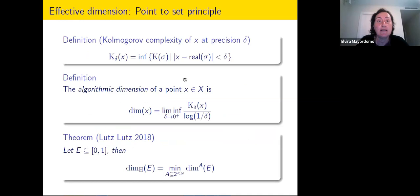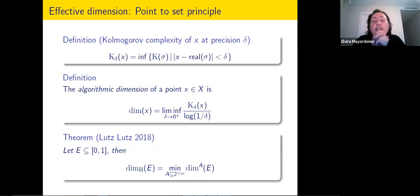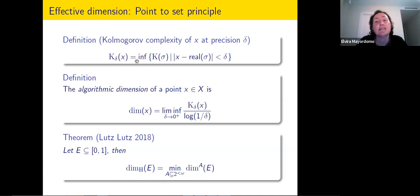If we go to the point-to-set principle, it is based on defining Kolmogorov complexity of a real point at a certain precision delta. The Kolmogorov complexity of x at precision delta is the smallest description of a rational number that is at distance at most delta. Sigma is just a string describing the rational number — for instance, a dyadic number if the alphabet is binary. Once you have this, you get a more geometric definition of effective dimension, moving away from Cantor space where information content is more related to balls in the space.